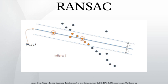k, the maximum number of iterations allowed in the algorithm; t, a threshold value for determining when a data point fits a model; d, the number of close data values required to assert that a model fits well to data.